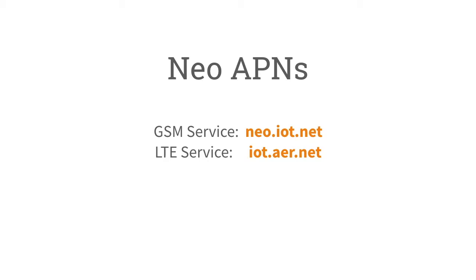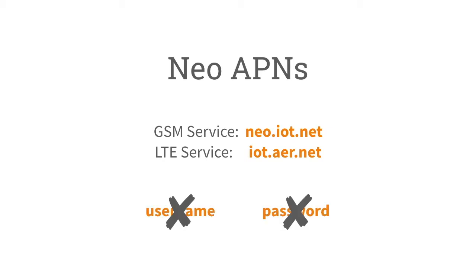The NEO connectivity service has two APNs: neo.iot.net for GSM service and iot.aer.net for LTE service. Note that these values are case sensitive and any discrepancies will result in data service not being available for your device. Also, please note a username and password are not required.